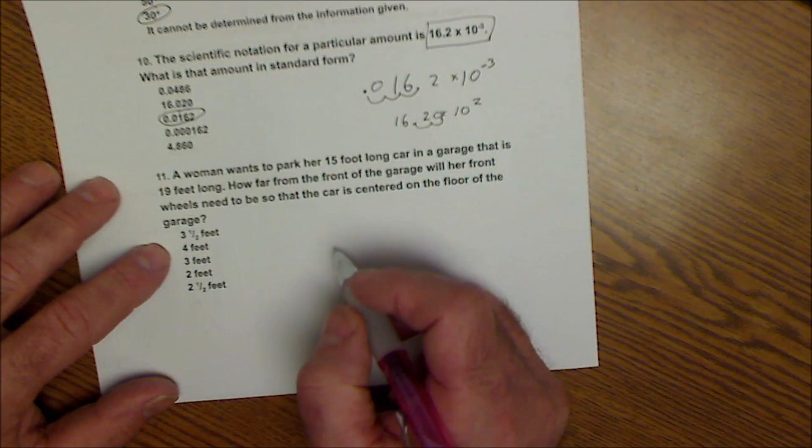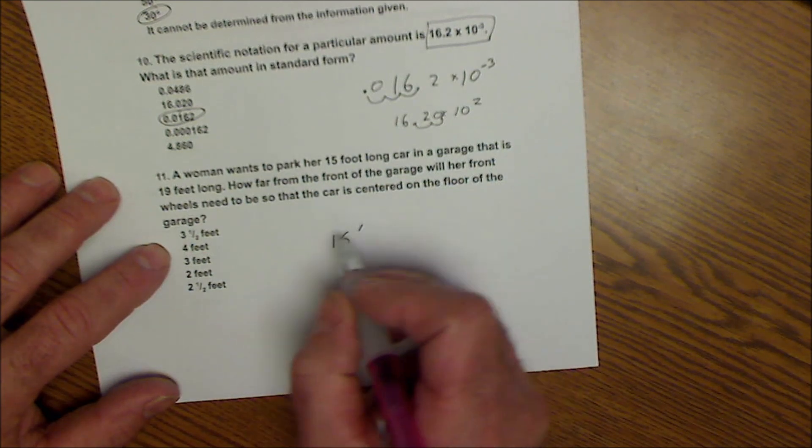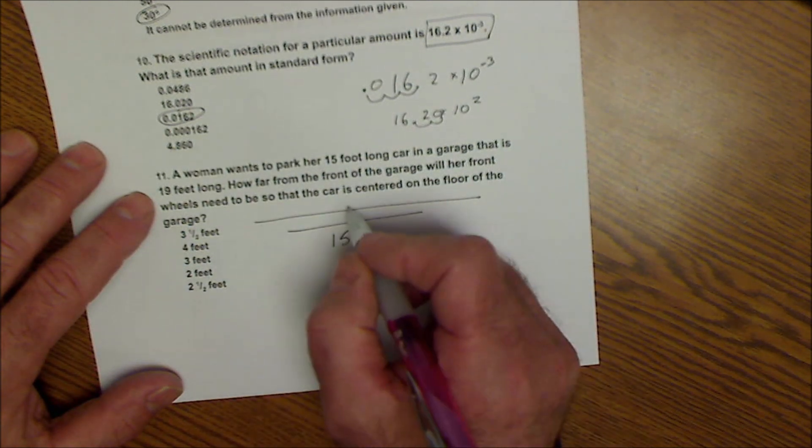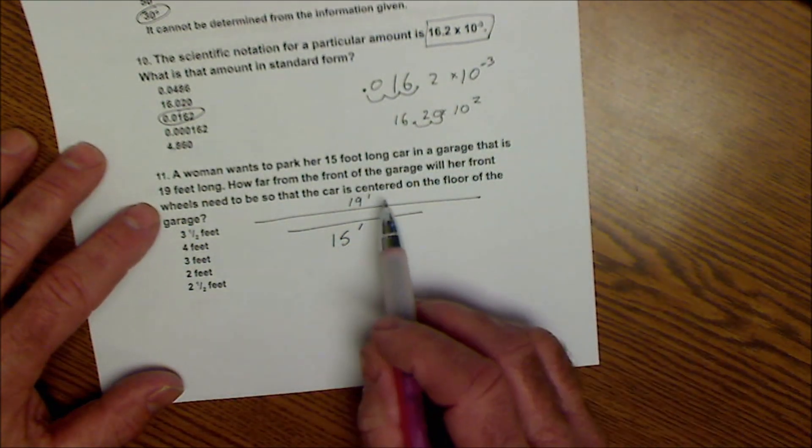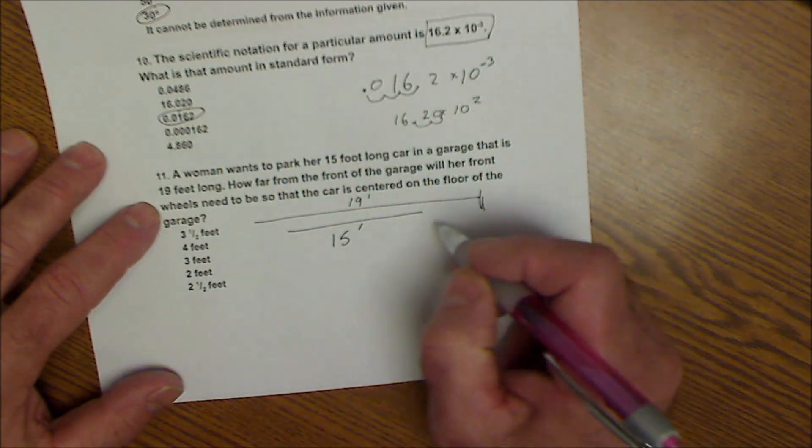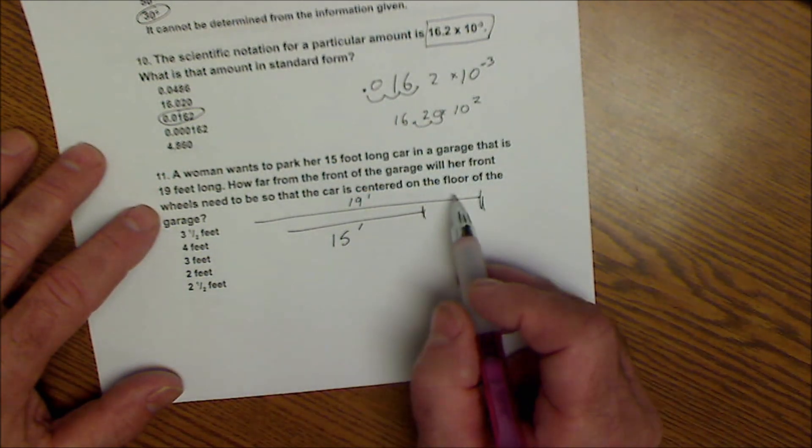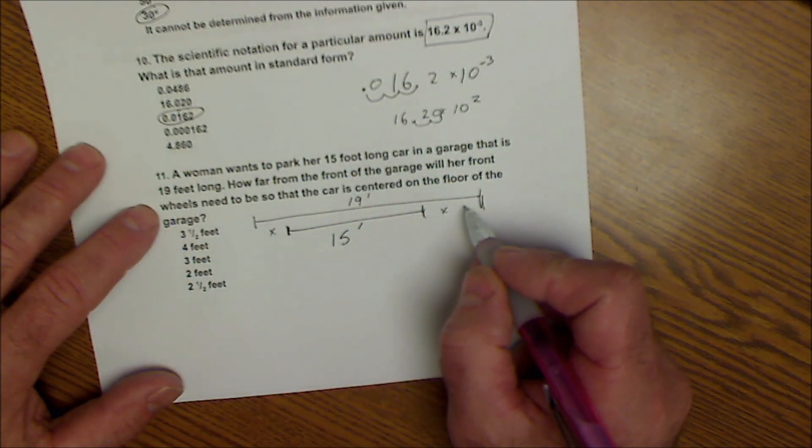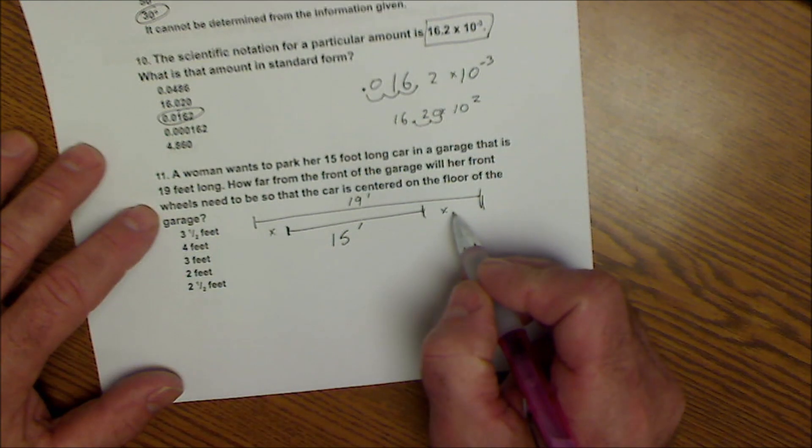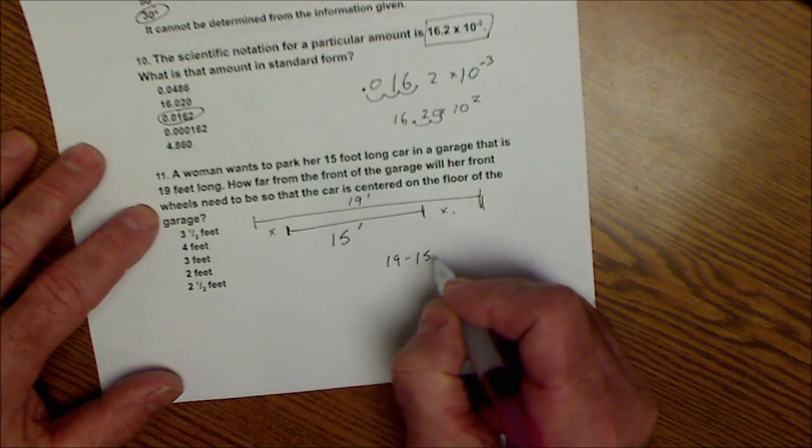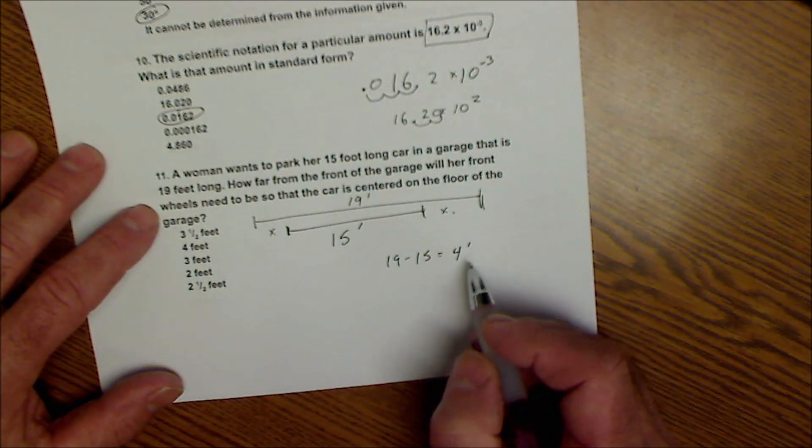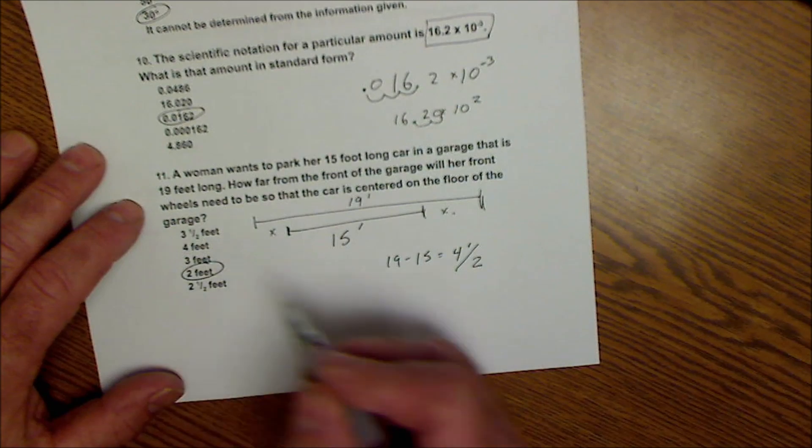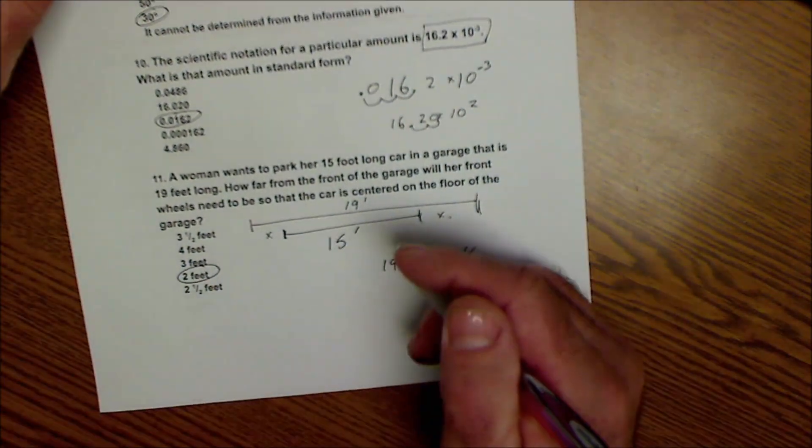Okay, a woman parks her 15-foot-long car. So I just draw that right out, her 15-foot-long car in a garage that is 19 feet long. So this is a total of 19 feet. How far from the front of the garage will her car be so it's centered on the floor? So I want this and this to be equal. The sum of the two together is 4 feet. So 19 minus 15 gives me 4 feet. And then I want it to be equal, so I cut that 4.5 to get 2 feet. So there's my answer right there. A little diagram helps a lot.